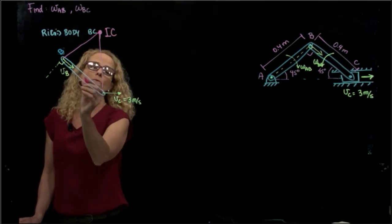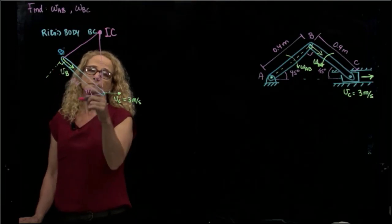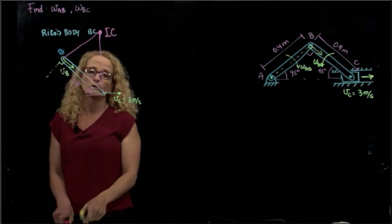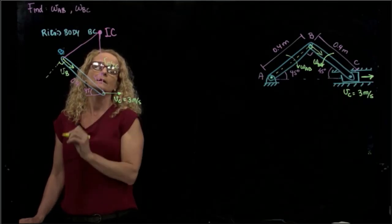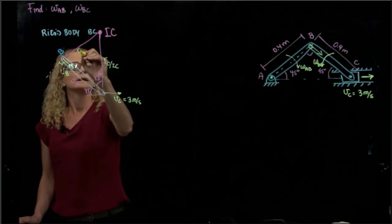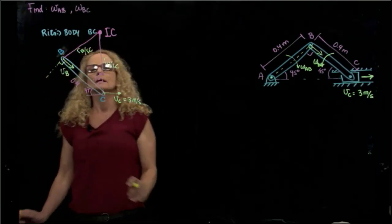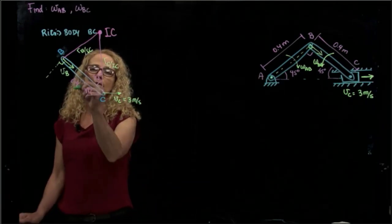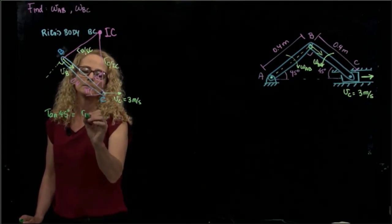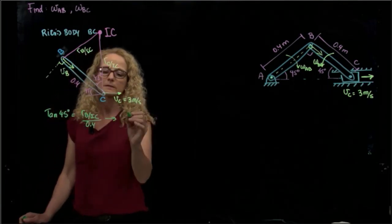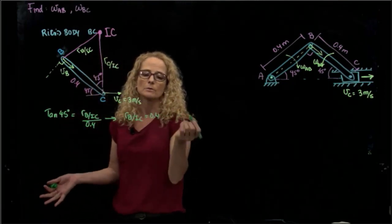Since we know this dimension, which is 0.4, and we know this angle, which is 45 degrees, that angle is also 45. We can use that information to find those distances. The distance from B to the instant center of rotation and from C to the instant center of rotation: tangent of 45, which is 1, equals R_BIC over 0.4. So that distance is 0.4 times 1, which is 0.4 meters. And cosine of 45 times R_CIC equals 0.4, so R_CIC equals 0.4 divided by cosine of 45.